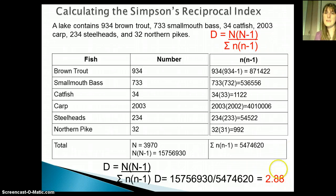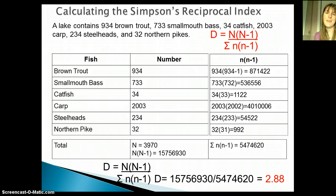2.88 is fairly biodiverse for an area. If we were looking at different types of ecosystems, we'd end up with different diversities, and we'll talk more about how to apply that and what it means. I hope this was helpful in thinking about biodiversity and how we quantify it.